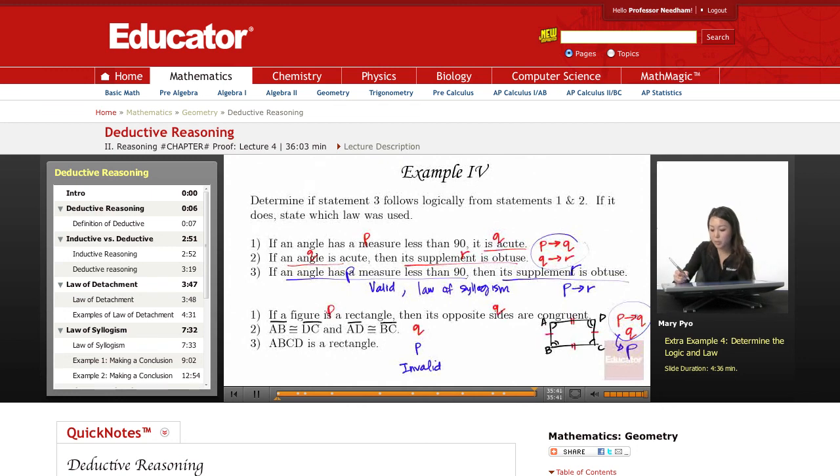Okay, law of detachment says P to Q is true, and P has to be true. Then Q is true, not the other way around. Okay? So this one is invalid. Make sure that this second statement has to be P. And then your conclusion is going to be Q.